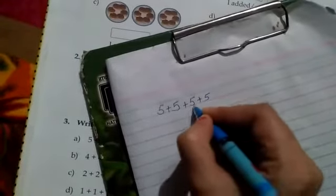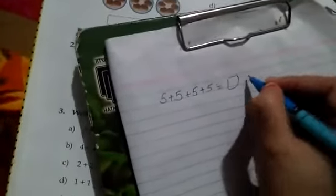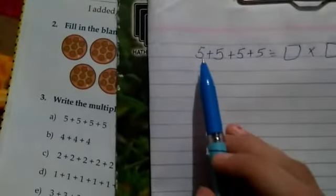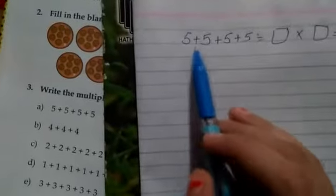5 plus 5 plus 5 plus 5 equals to dash multiply dash equals to dash. We have to solve this. How we will solve this? See, firstly how many fives are given? We have to count that: 1, 2, 3, 4.